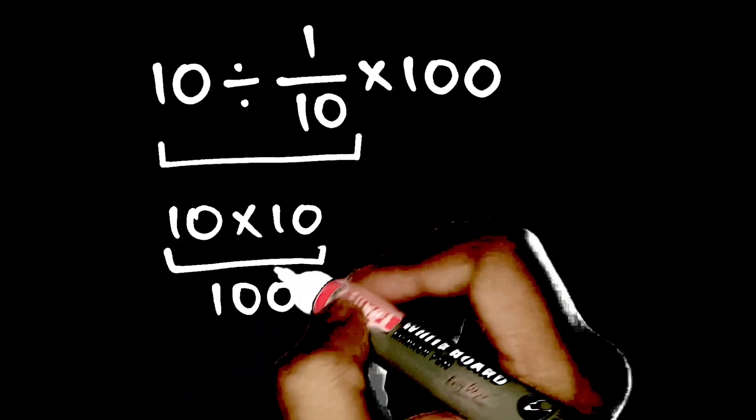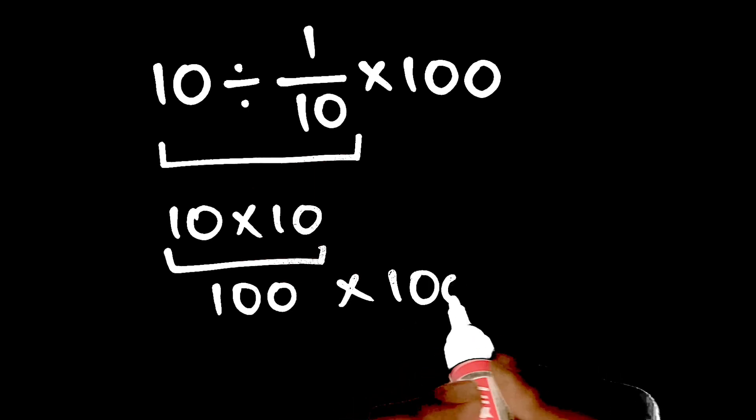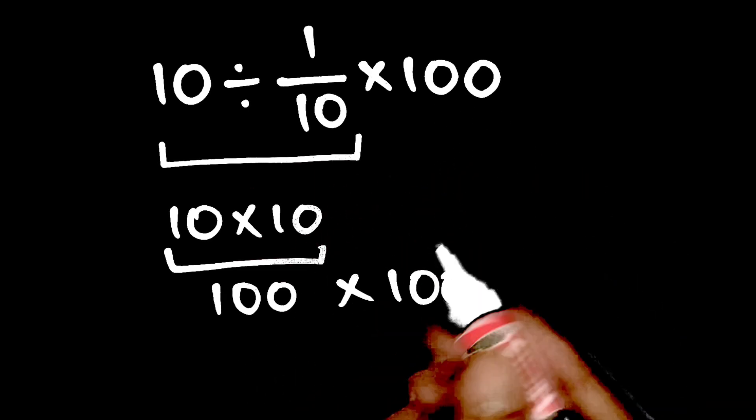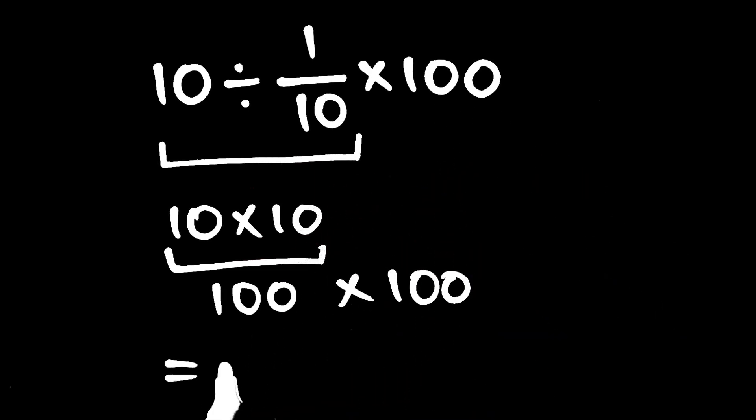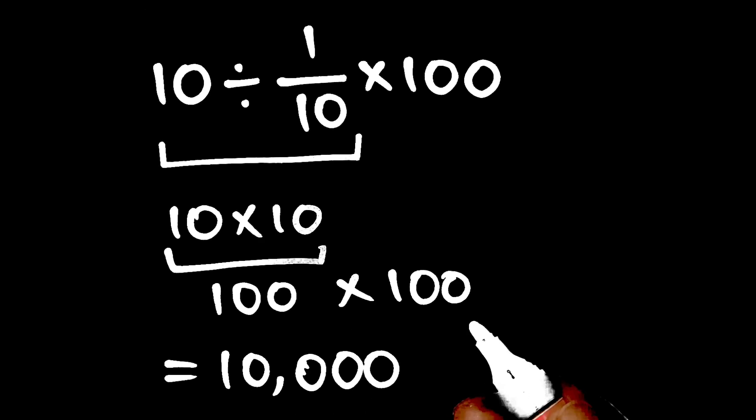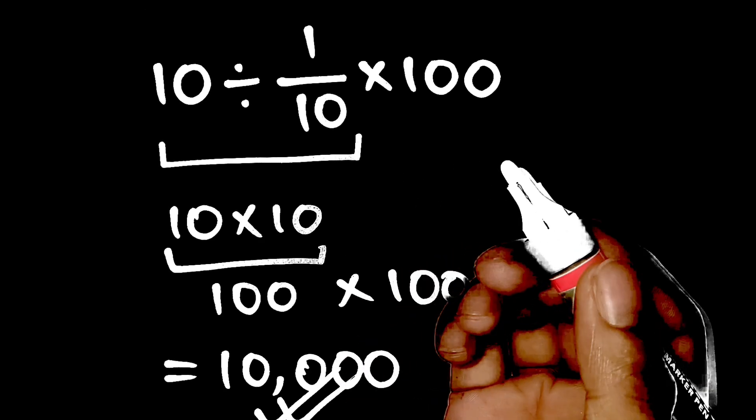Next, multiply that 100 by the last 100. Wait, careful! It's just times 100, so 100 times 100 equals 10,000. So, the correct answer is 10,000, not 1.